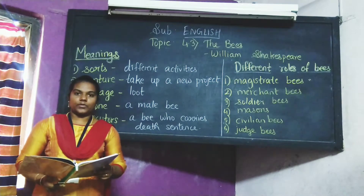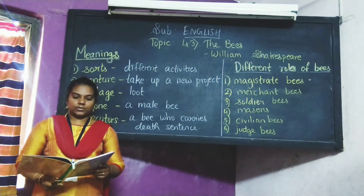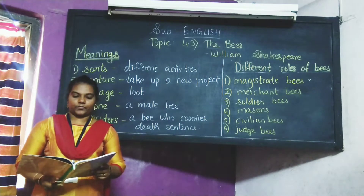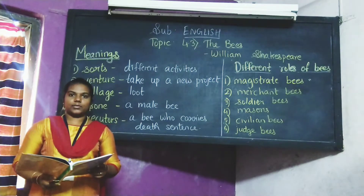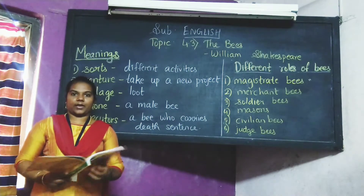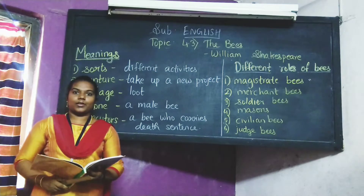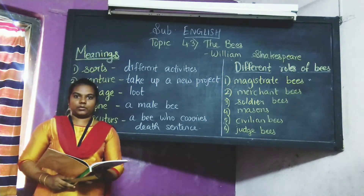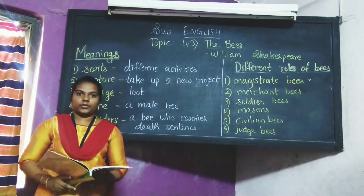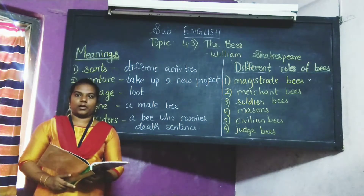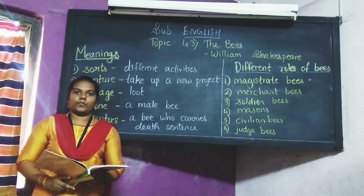Next: 'They have a king and officers of sorts, where some like magistrates correct at home, others like merchants venture trade abroad.' In these lines, the poet William Shakespeare says that the king and officers are carrying out different tasks — 'sorts' meaning different activities. In a beehive, they have a king and officers, just like in our country we have a president, prime minister, and government.